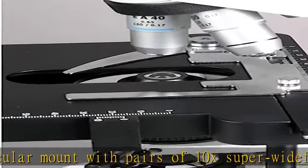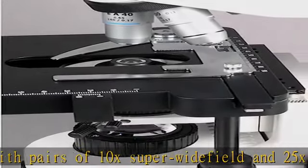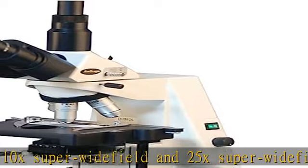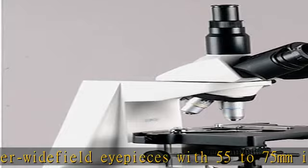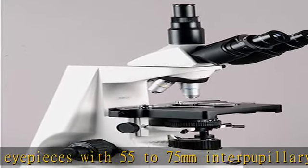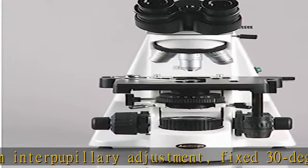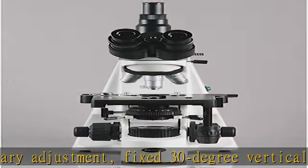The microscope includes a 100xS spring oil DIN infinity plan achromatic objective that provides longer working distance for improved focus when auxiliary components are utilized. It features bright field/dark field halogen illumination with rheostat to control light intensity and a Kohler condenser.